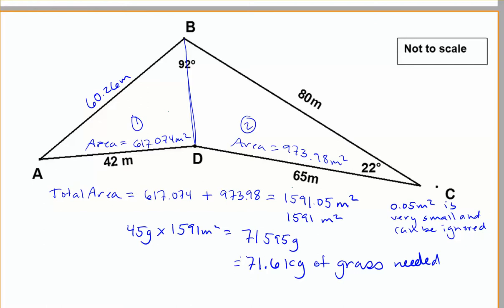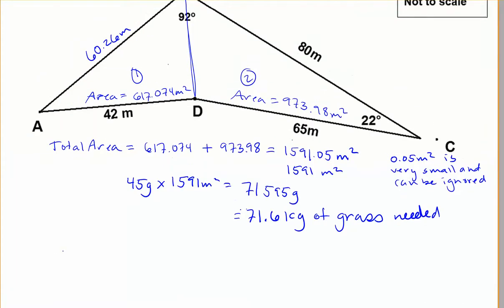The next thing that they want to know is we're putting paver stones around the entire park, so we need to know our perimeter. To get to the perimeter, that's just the distance around the outside of the shape. So our perimeter is 60.26 plus 80 plus 65 plus 42, adding up all the way around. And you get roughly 247.26 meters.